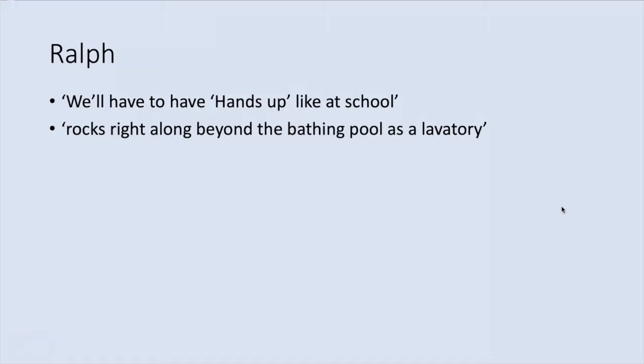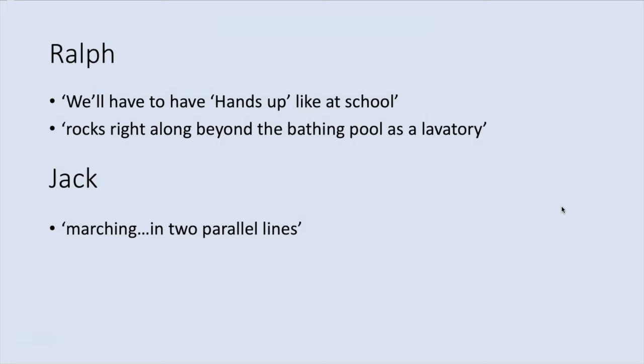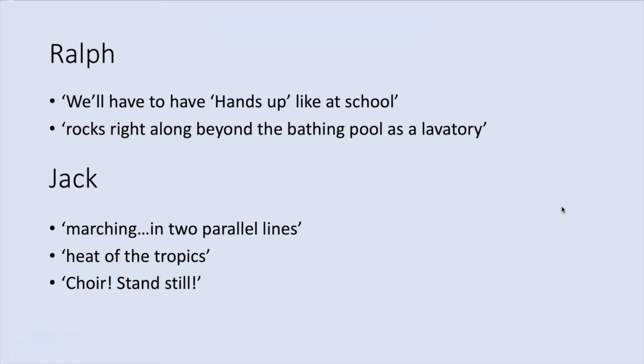Ralph's opposite is the totalitarian leader Jack, who demands complete obedience from his followers and whose greatest desire is to torture and kill, seen through his obsession with hunting. The first time we meet Jack, he is controlling the choir, who arrive marching in two parallel lines in Chapter 2. The choir are wearing long black coats, which are immediately deemed impractical in the heat of the tropics. Jack leads the choir as seen when he shouts 'choir stand still.' Golding's use of sentence length and exclamations indicate his abrupt leadership style — nothing is open to debate; he demands obedience from all.